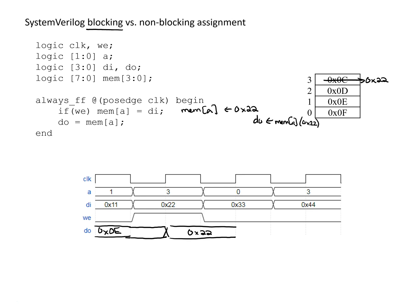Moving on to the next clock edge, the address changes to 0 and write enable is not true, so we're not writing anything — we're just reading. Looking at address 0, we can see it has a value of 0x0f.